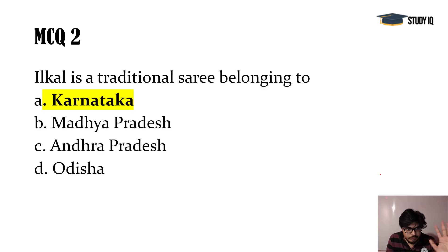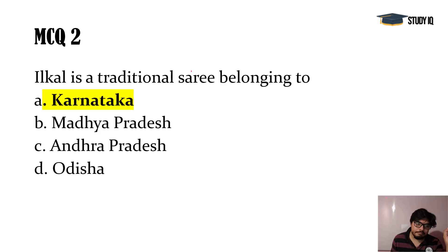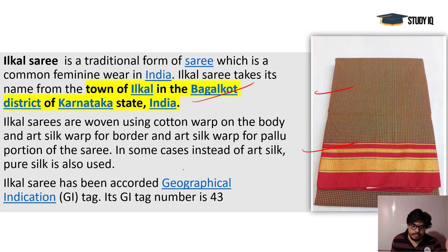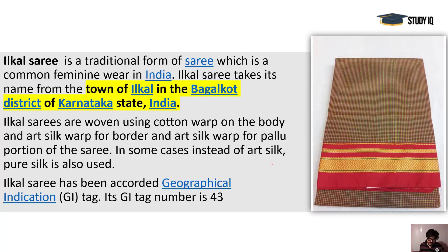Ilkal Saree is famous in Karnataka — Ilkal is a place in northern Karnataka in the Bagalkot district and also the Belagavi district. Cotton and silk are both used in manufacturing these sarees. It has received the Geographical Indication (GI) tag, which comes under the WTO's IPR section. India has a particular law regarding GI tags.